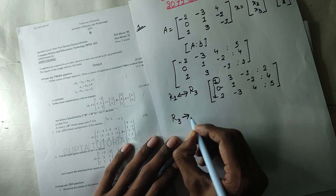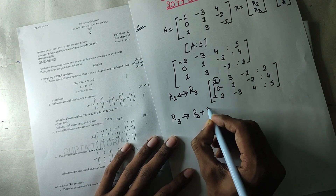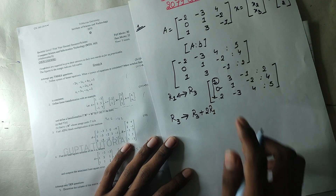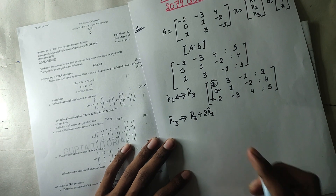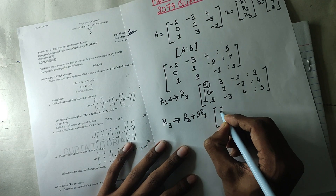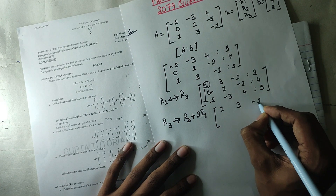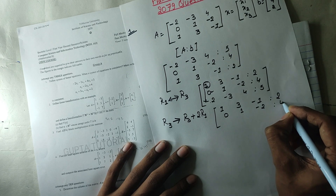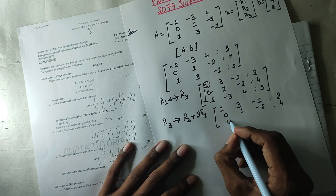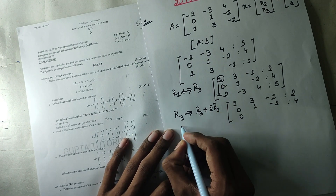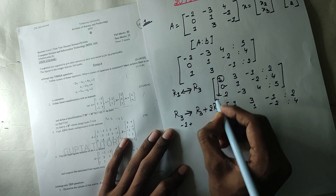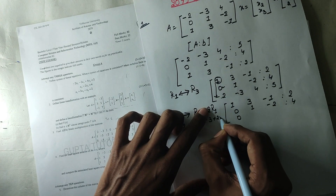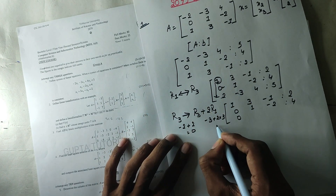So R3 implies R3 minus 2 R1 to help us, so this is 0. So R3 implies R3 minus 2 R1. Minus two, four — just the calculation. This is zero, this is zero. R3 is minus two. Two into R1 is equal to two, equals to zero minus three is equal to two into three, so this is all together three.